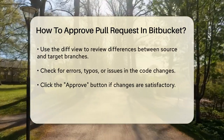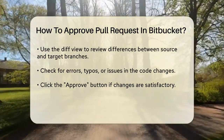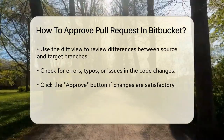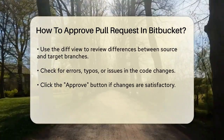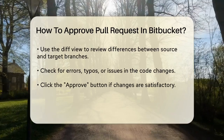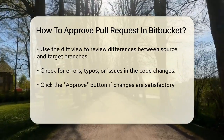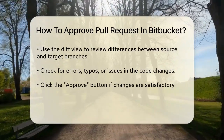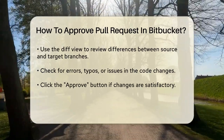To review the changes, you can look at the DIFF view, which shows the differences between the source branch and the target branch. This is where you can check for any errors, typos, or other issues that might need to be addressed before approving the pull request.